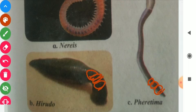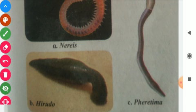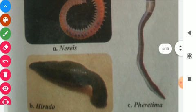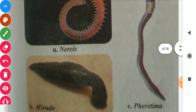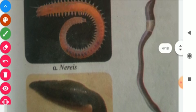We have made Ringworms or Segmented Worms. This is called as Leech and Pheretima. This is called as Earthworm.